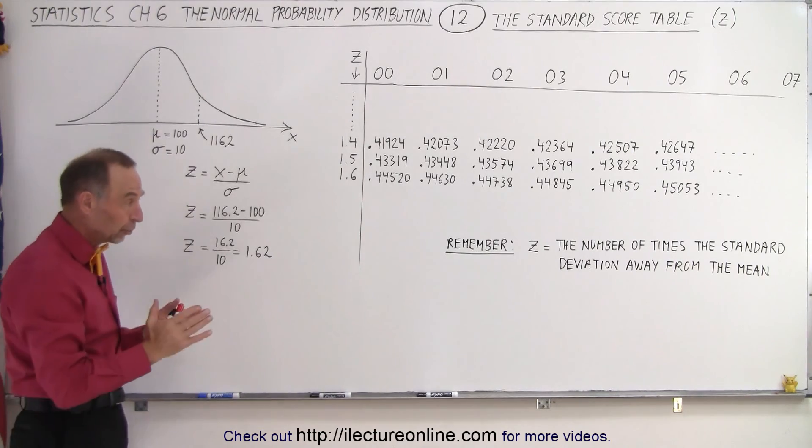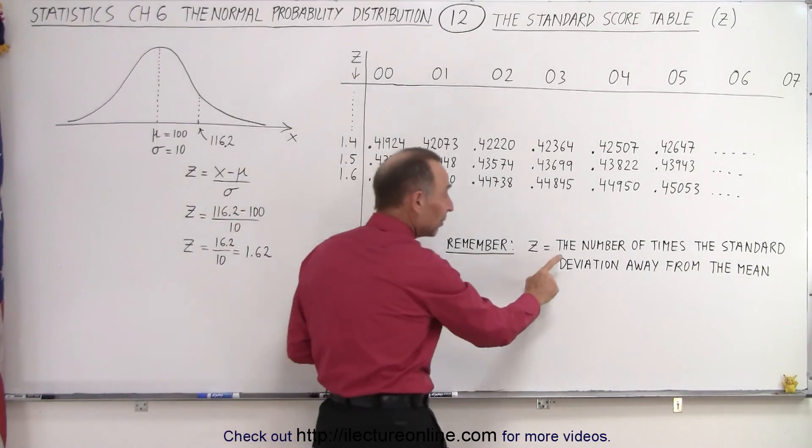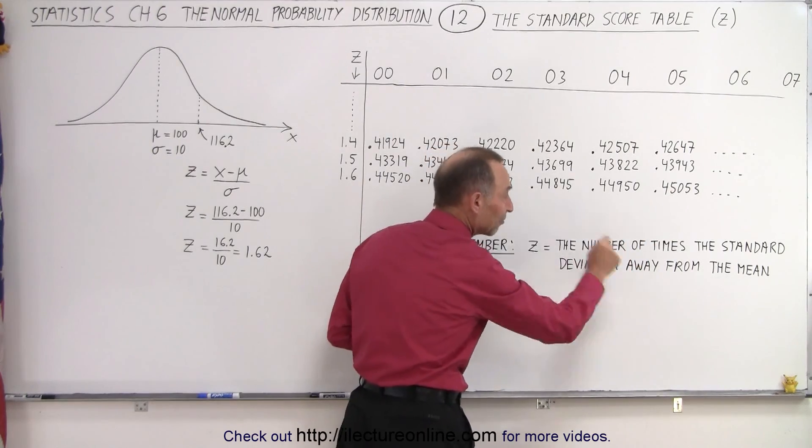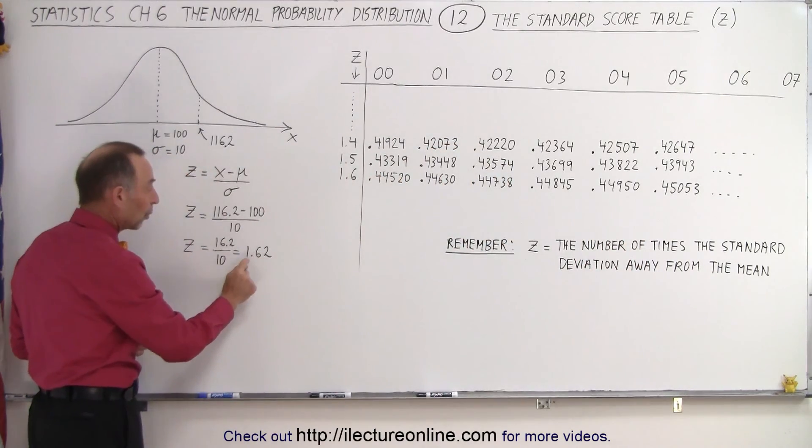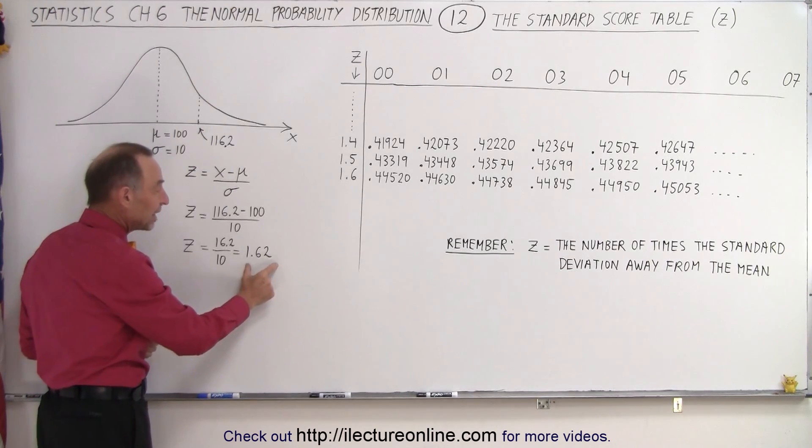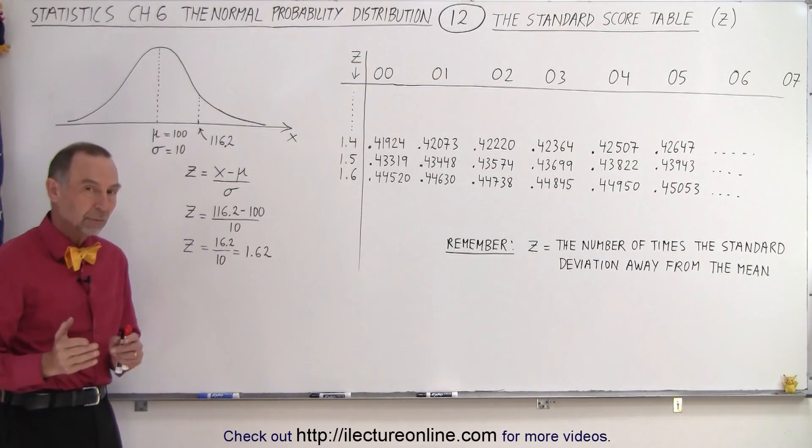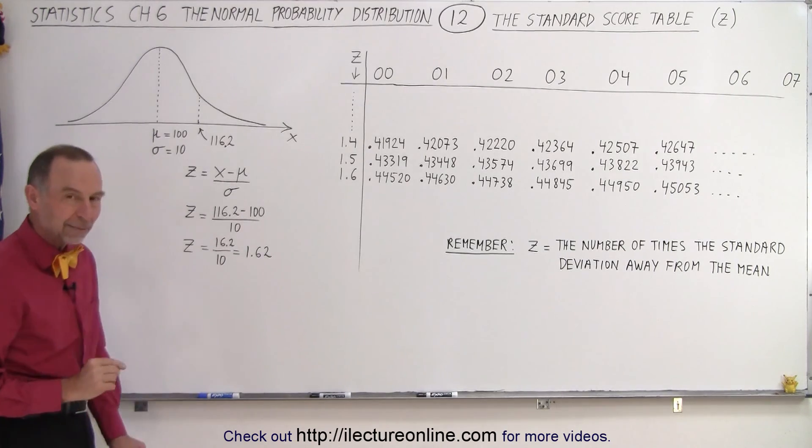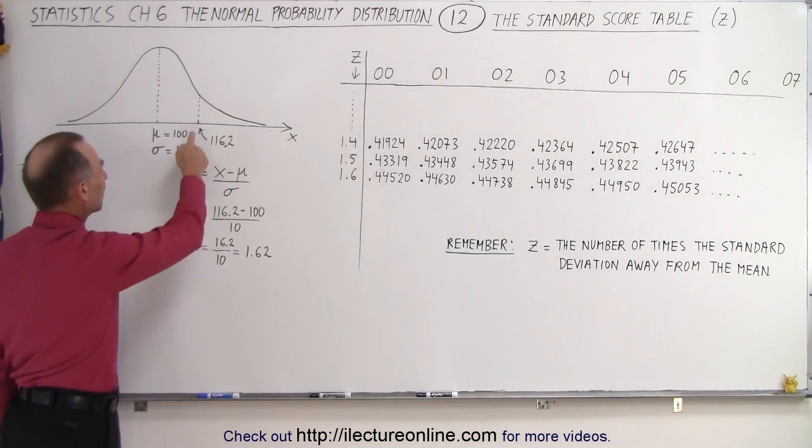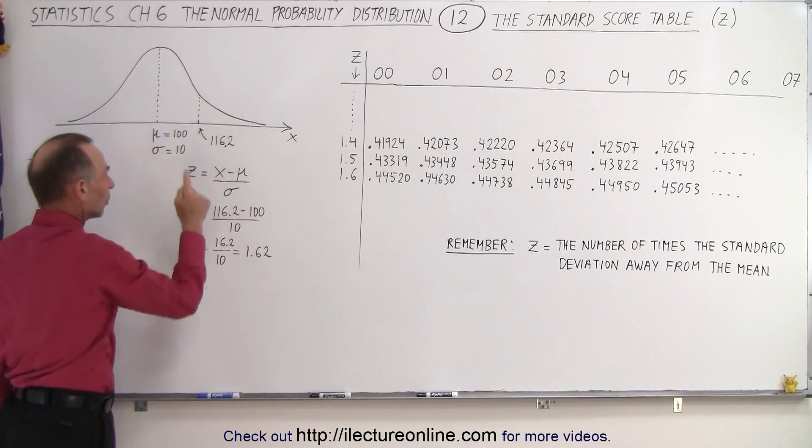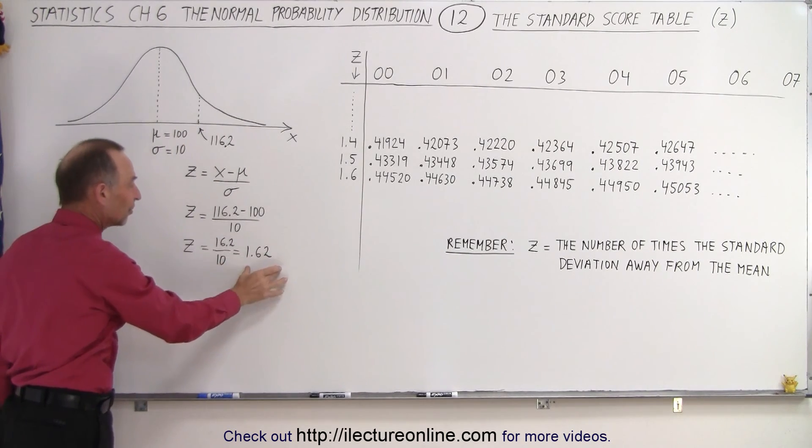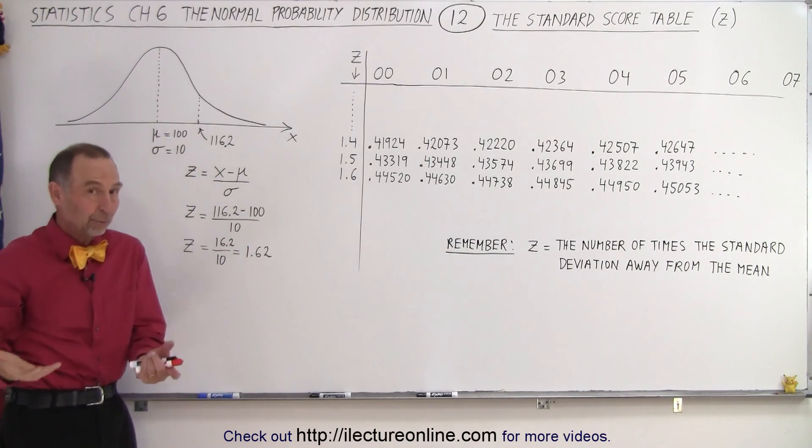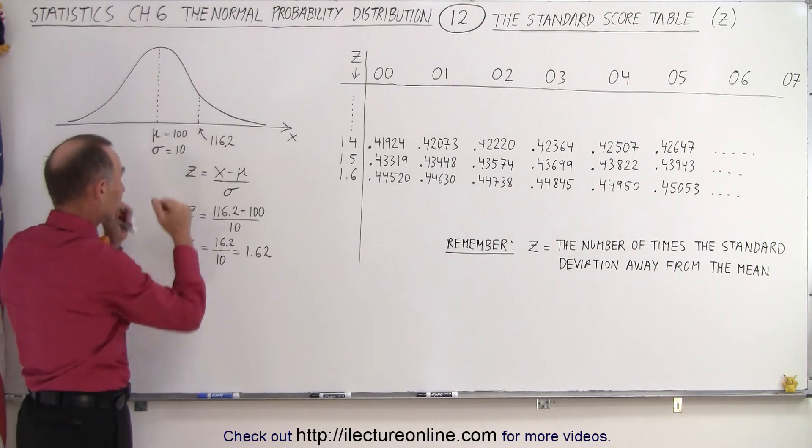Now what does that really mean? Well it turns out that Z represents the number of times the standard deviation we are away from the mean. So here what we're seeing is we're 1.62 standard deviations away from the mean. More than 1, not yet 2, somewhere in between. 1.62 times standard deviation away from the mean. So this particular point equals 1.62 times the standard deviation of 10 away from the mean, which 10 times 1.62 is 16.2.